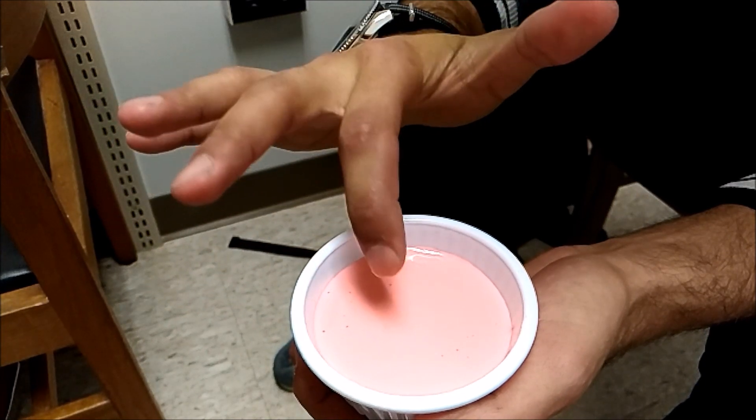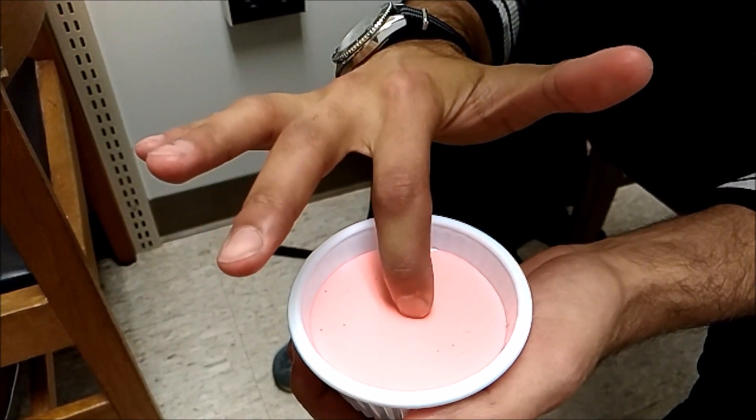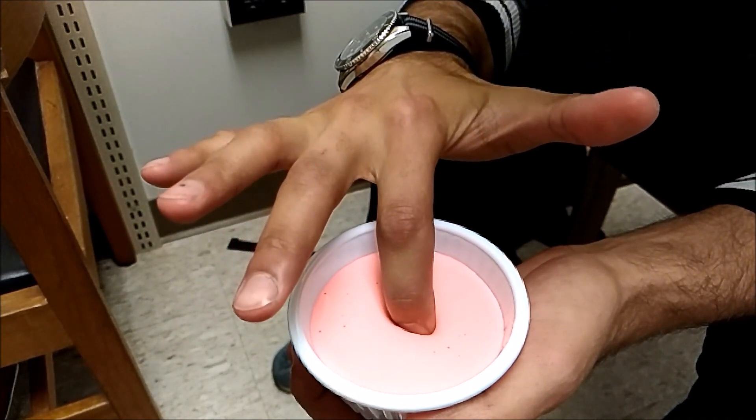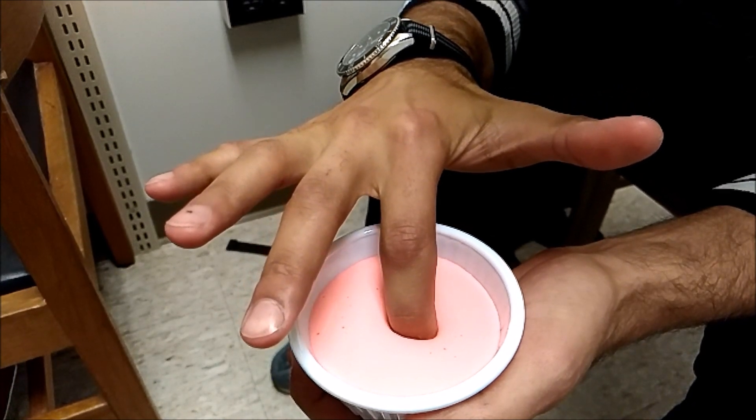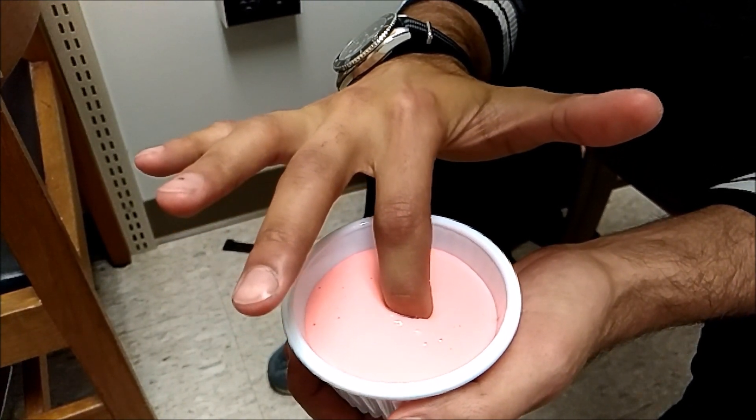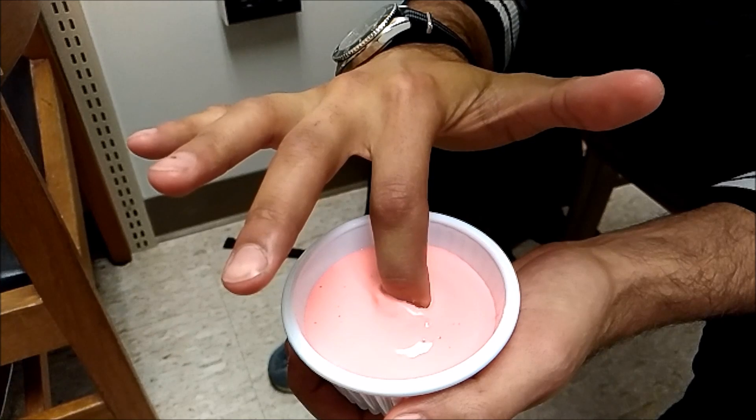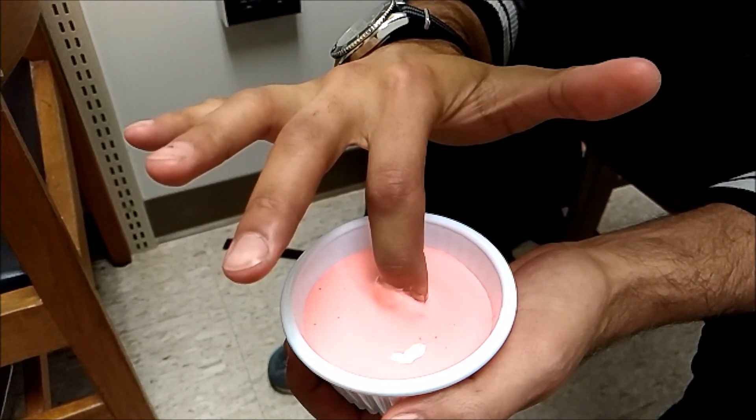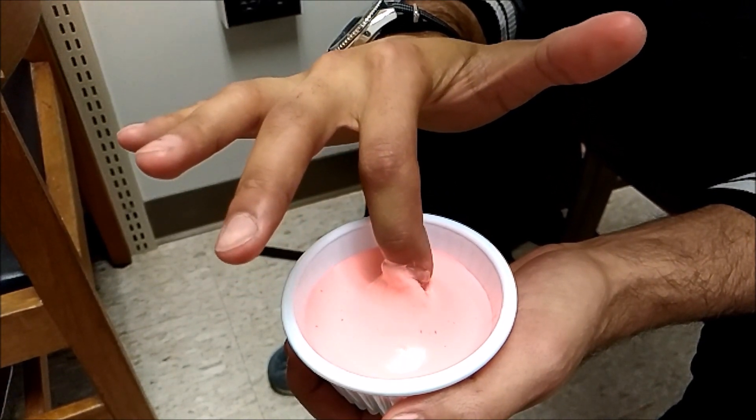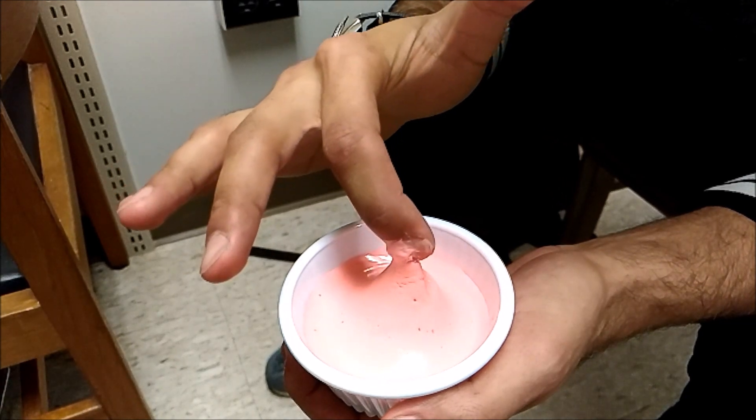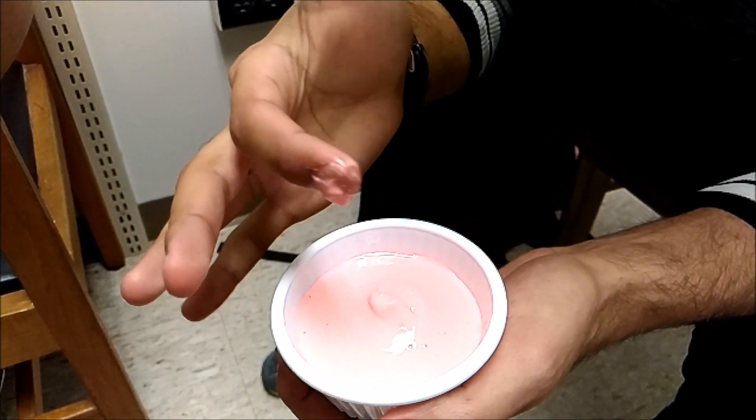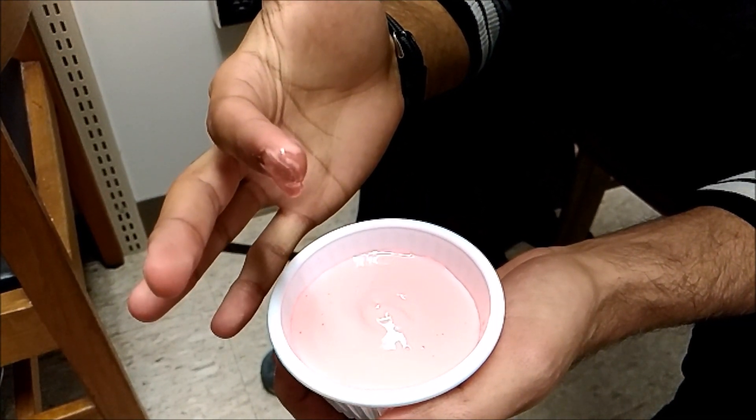When I poke the oobleck very slowly, my finger sinks into the substance with ease. Next, I'm going to tap quickly again, and you'll notice that my fingers can no longer break the surface.